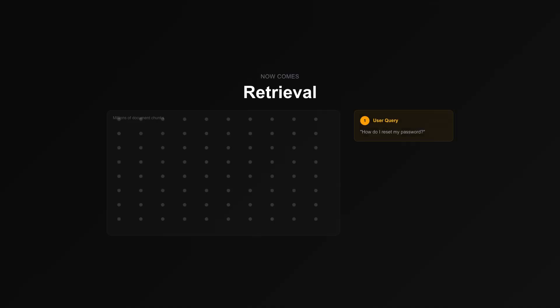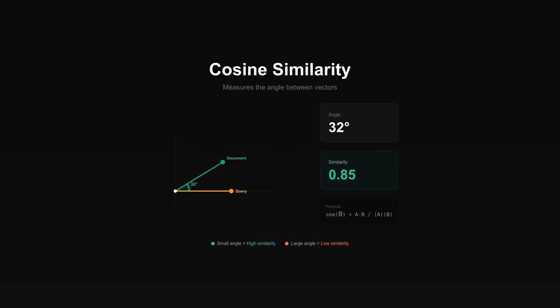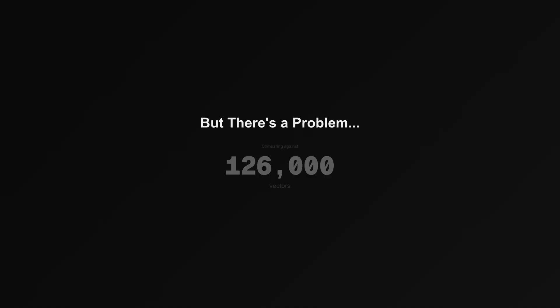Now comes retrieval. You have millions of document chunks, each converted to a vector. The user asks a question — you embed that too. Now find the nearest neighbors. Cosine similarity measures the angle between vectors: small angle, high similarity. Your query vector points in a direction, and you find document vectors pointing the same way.